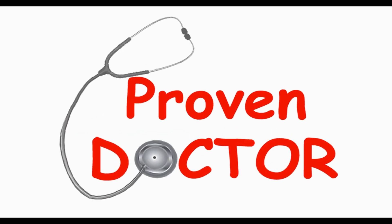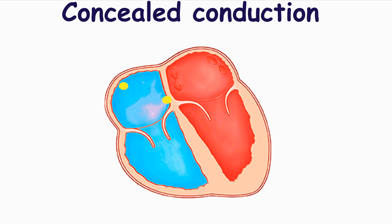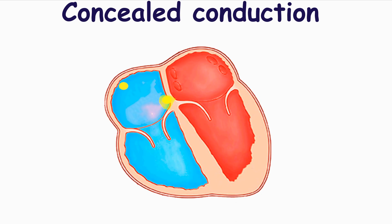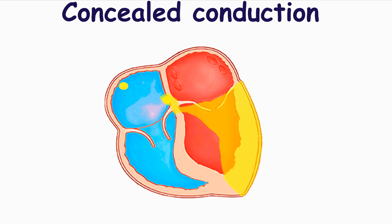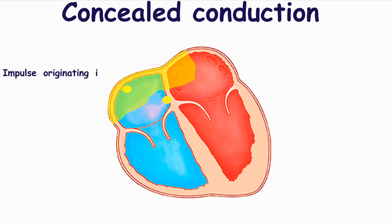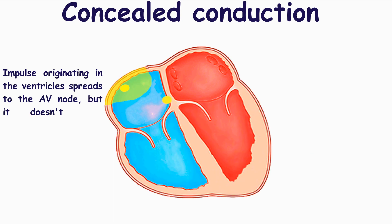AV conduction is represented on ECG by the PR interval. In the case of concealed conduction of premature ventricular complex, the impulse originated from the ventricle spreads toward the atrioventricular node retrogradely.